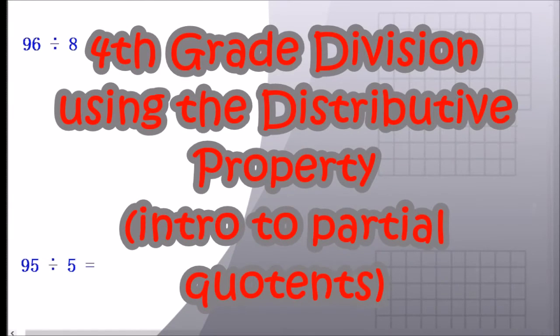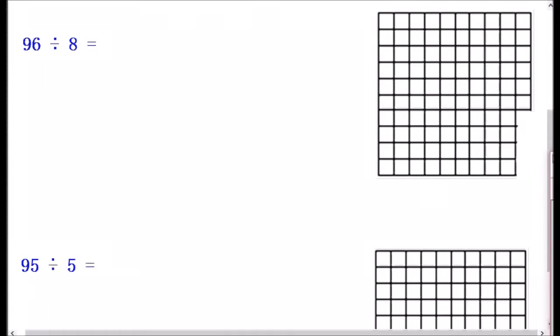So here we have 96 divided by 8. Now this would be a lot easier if it was something like 80 divided by 8, because we think 8 times what equals 80, and that would be 10. But that's the idea we're going to use. What if this was just 80 divided by 8?